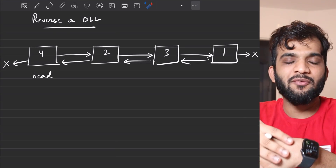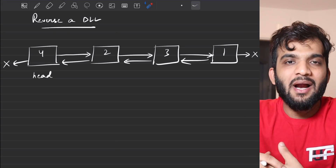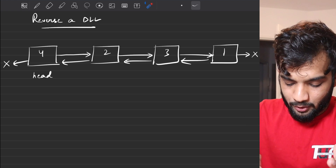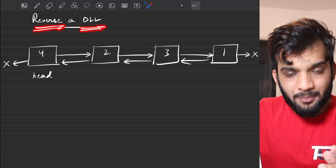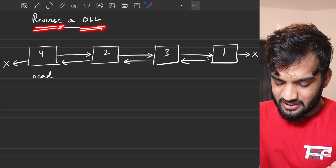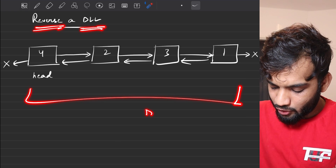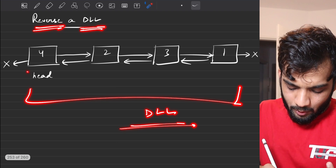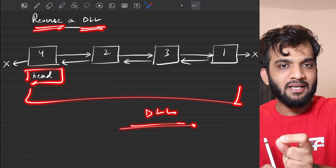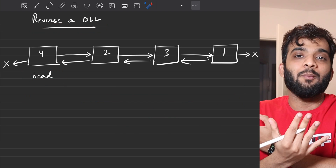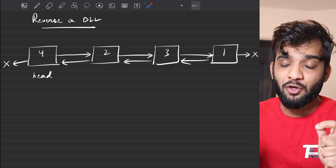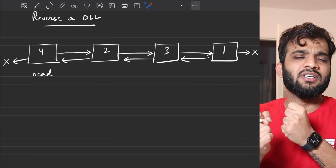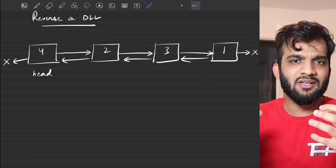Let's continue the playlist. Hey everyone, welcome back to the channel. The problem we are going to solve today is reverse a doubly linked list. The problem states: you will be given the head of a doubly linked list and you have to reverse it and return the new head.